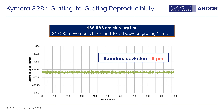Here's data showing the grating-to-grating reproducibility on the Chimera 328. Again looking at the 435 nm mercury line, this trace shows a thousand movements back and forth between grating one and four, with a standard deviation of only on the order of five picometers.